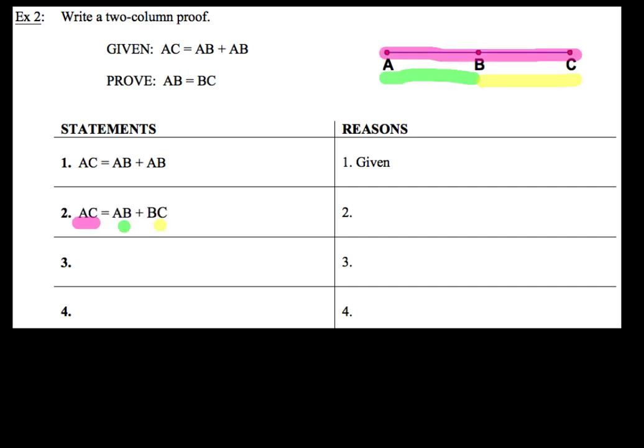Now for step number two I'm going to use this little piece of information here AC is equal to AB plus BC and that is because of the segment addition postulate.